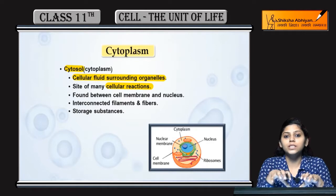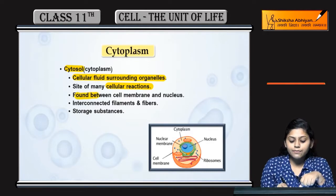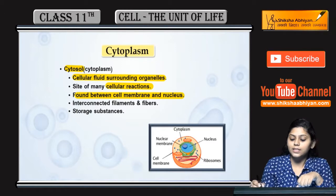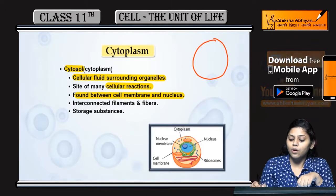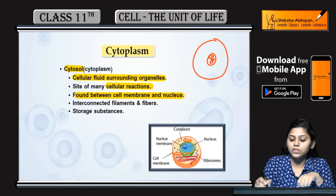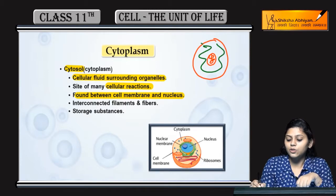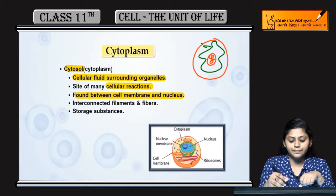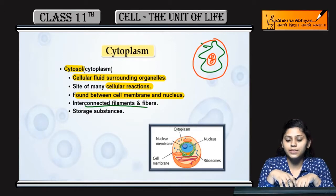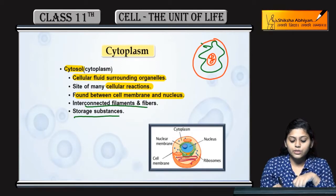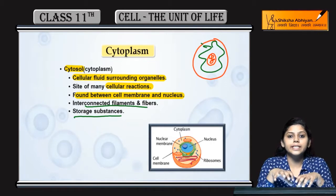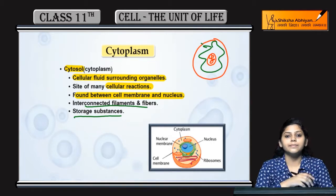It is found between the cell membrane and nucleus. Cell membrane aur nucleus ke beech ka jo bhi region hai, cytoplasm wahan hota hai. Interconnected filaments and fibers are also present there, and storage substances bhi cytoplasm mein hote hain.